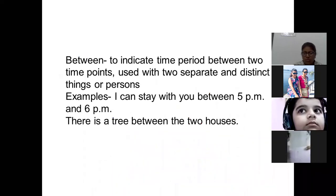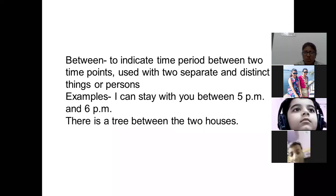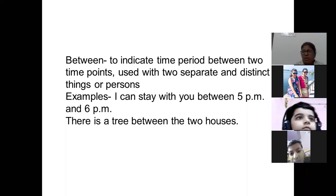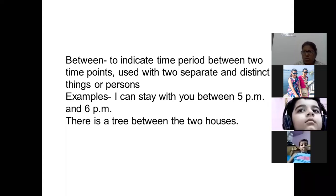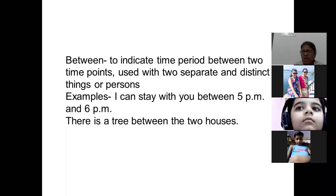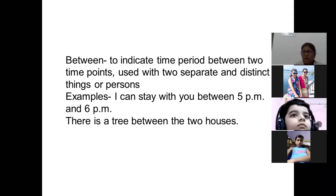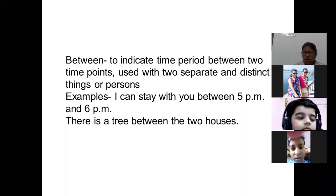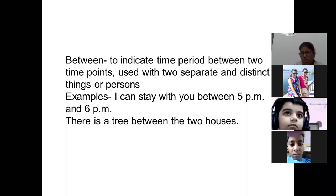'Between' is used to indicate a time period between two time points, or with two separate and distinct things or persons. For example: I can stay with you between 5 pm and 6 pm; there is a tree between two houses. 'Among' is used when there are more than two — it is about a group.